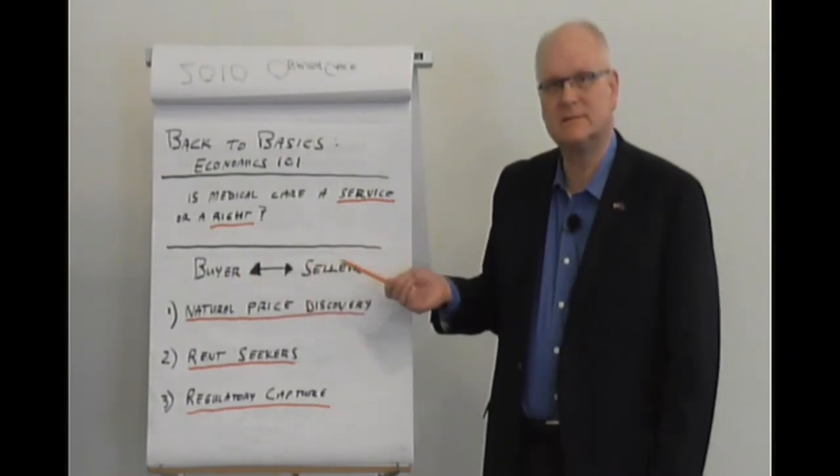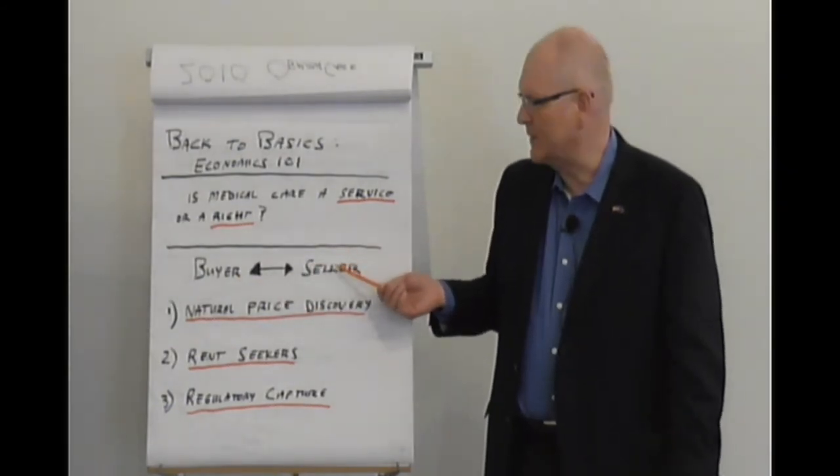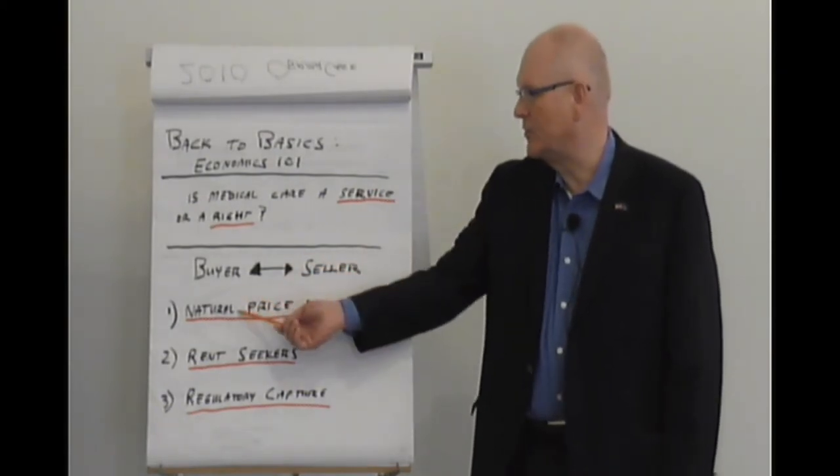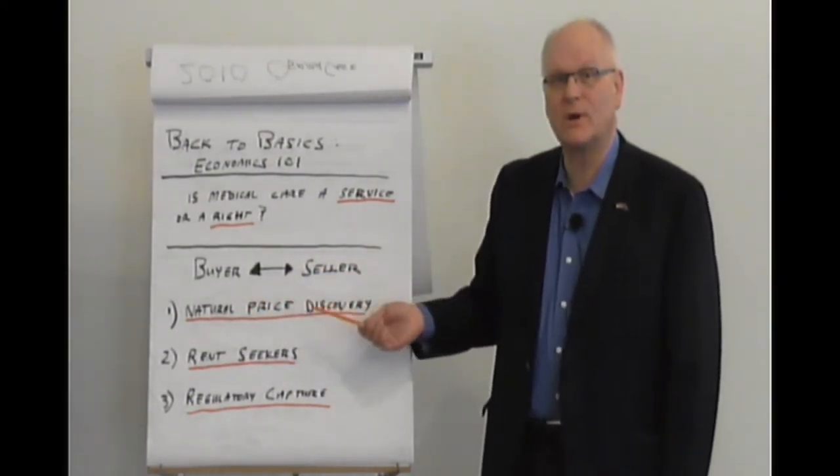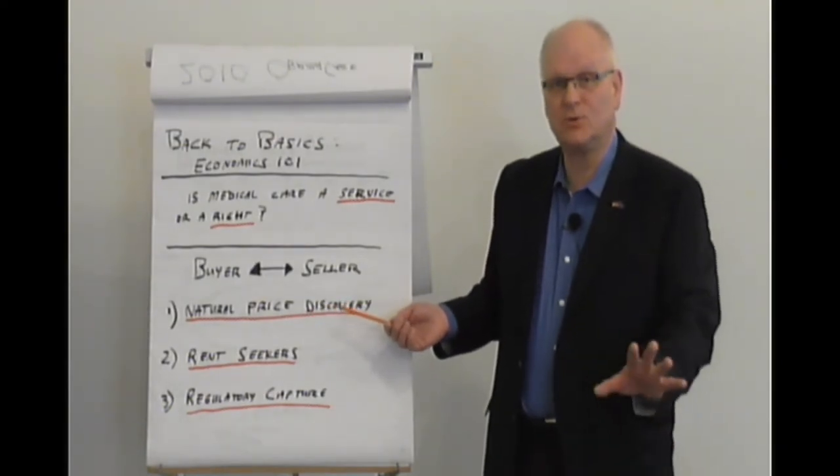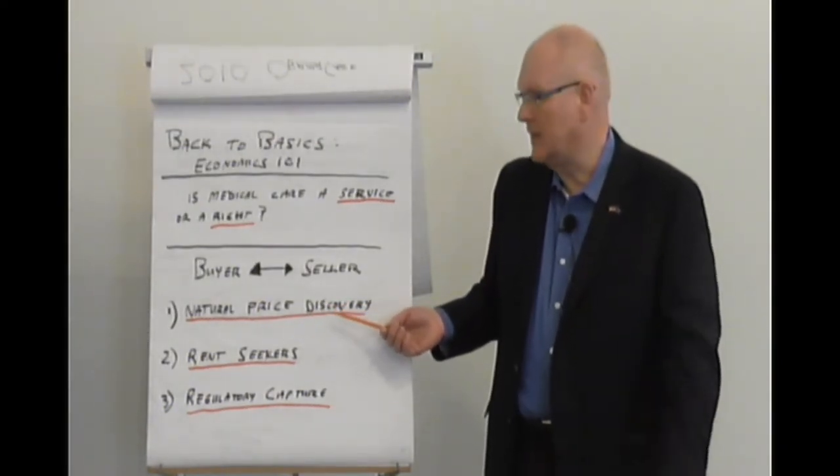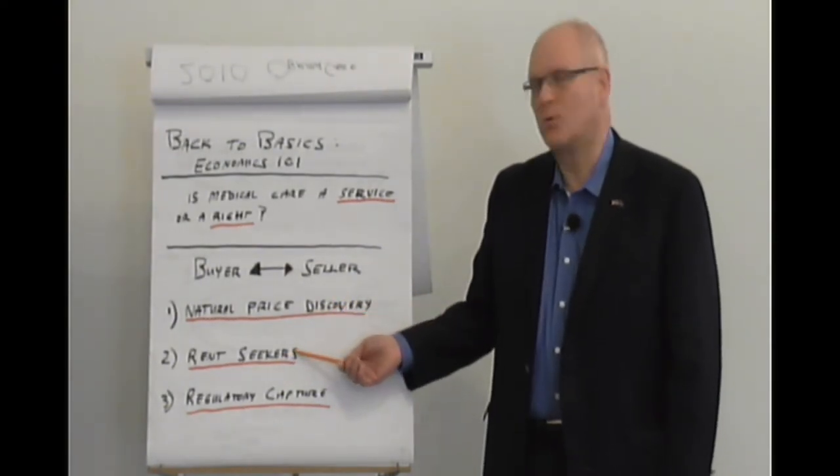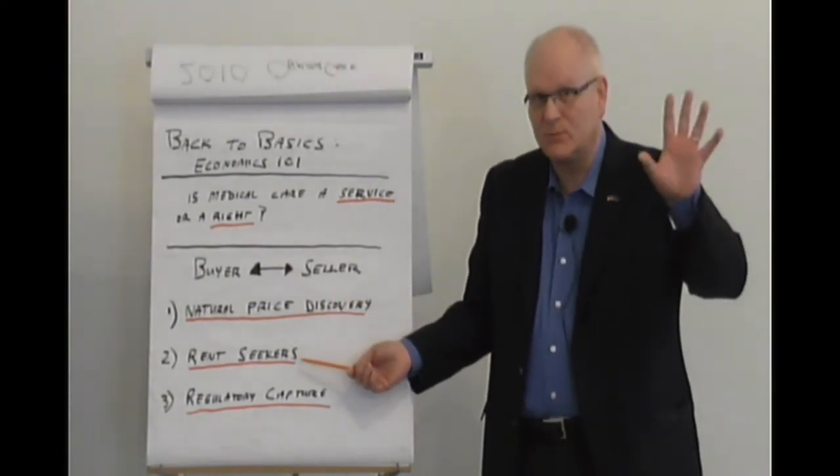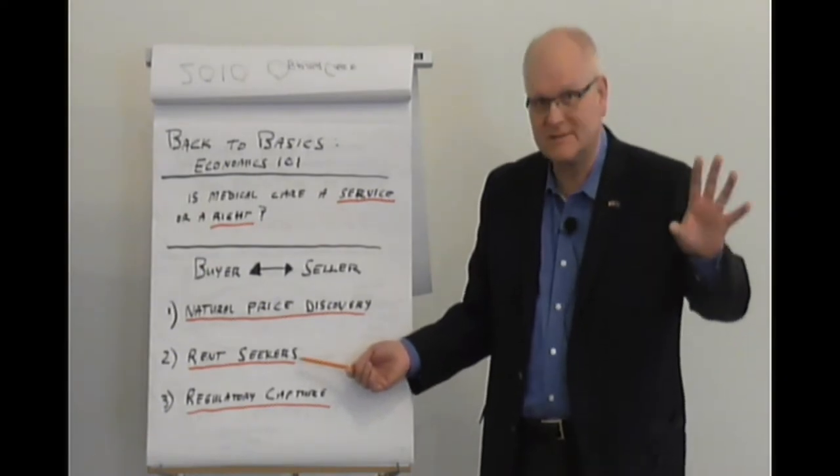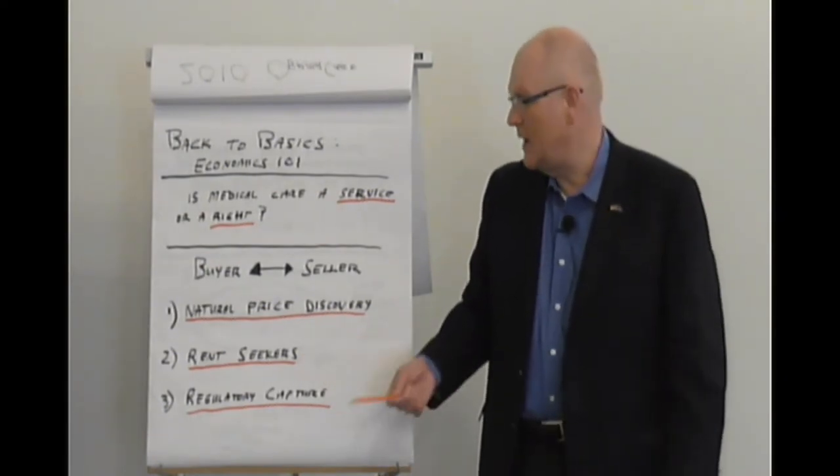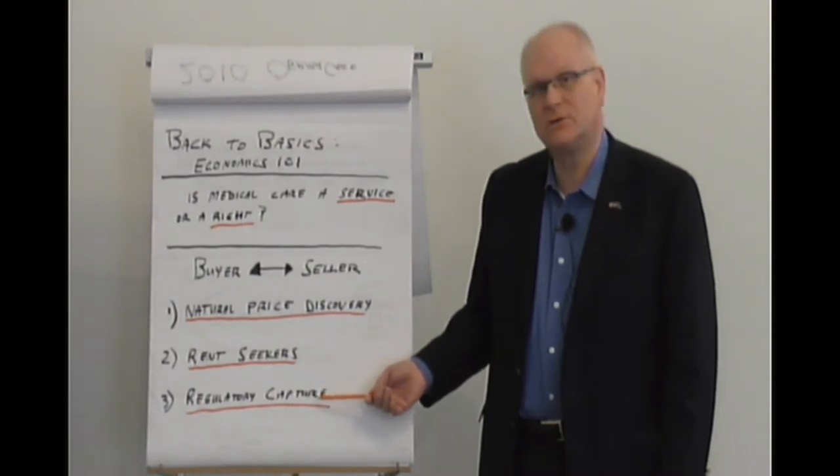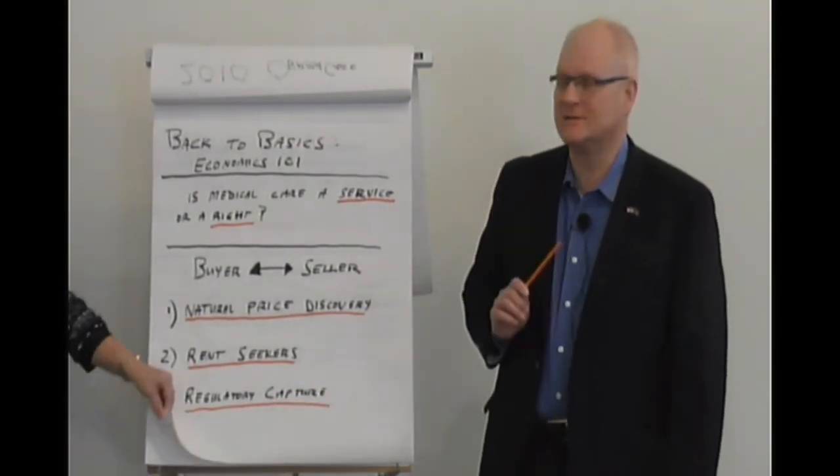Now the economics of medical care is such that we have buyers, that's you the patient, and sellers, that's me and my colonoscope. Buyers and sellers. It's basic economics. What we have in this transaction is something called natural price discovery. That's the pure form of free market. But it is confounded by the rent seekers. Rent seeking is something else. And we also have a phenomenon confounding this of regulatory capture. I shall explain.